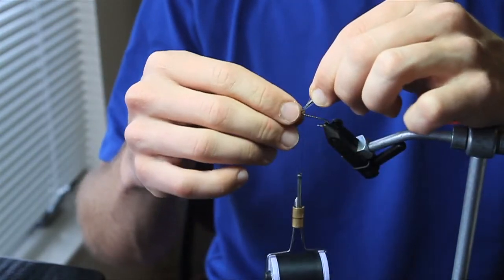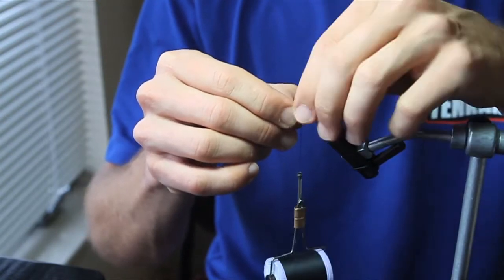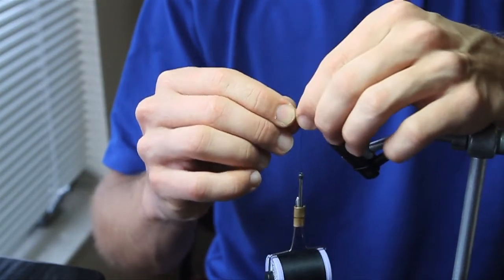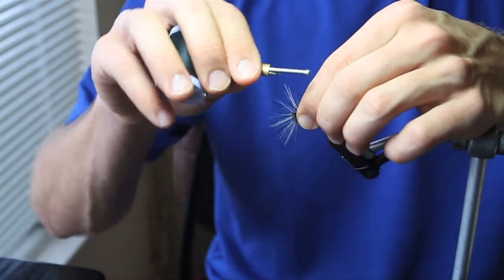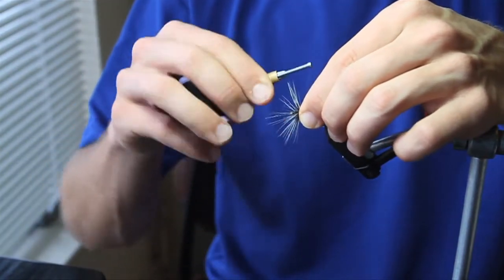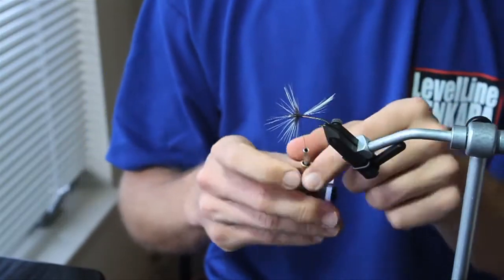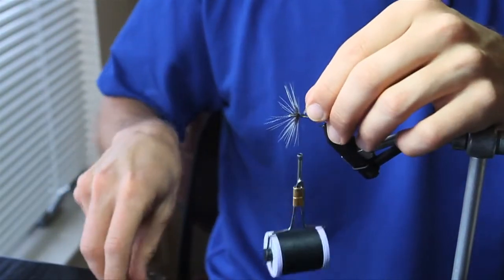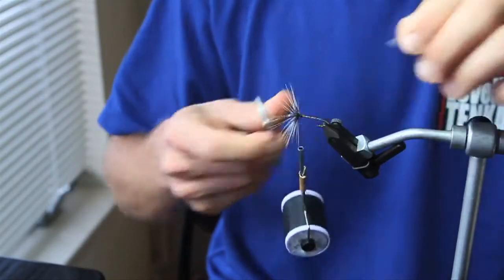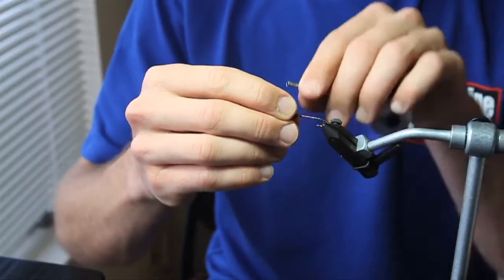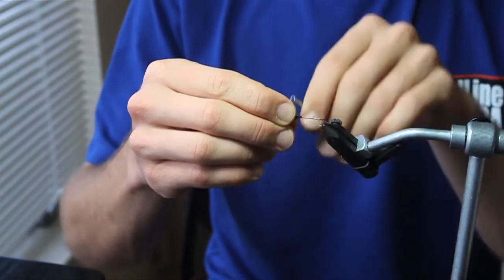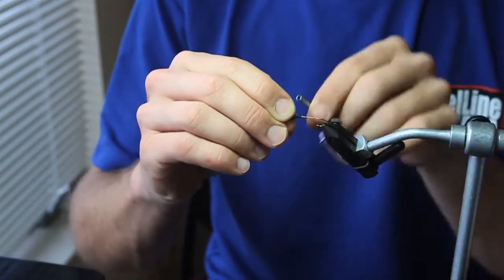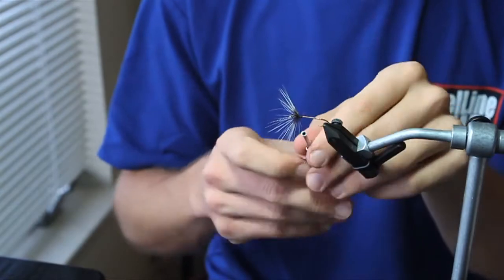And then you brush it forward. And here you have the tip of the feather. So brush it forward, hold it here, and pass the thread between your fingers to secure the end of the feather. Now you can see that it's pretty much there. Just brush it forward and build a little bit of a base behind the hackle. And you can see that it's already facing forward.